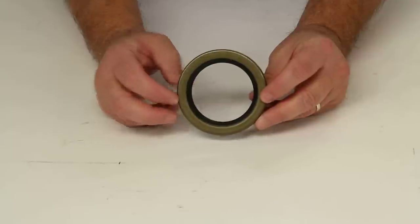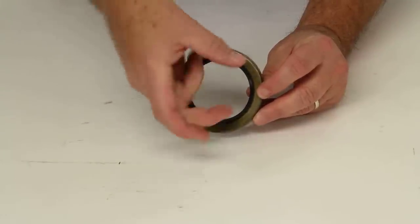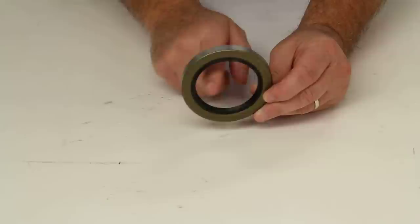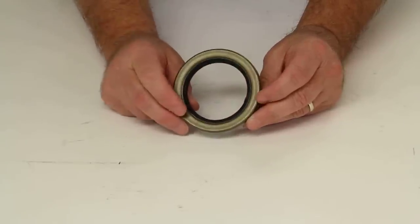Basically the wear sleeve is a very thin metal sleeve that would fit over the spindle and would fit on the inside of the oil seal right here.